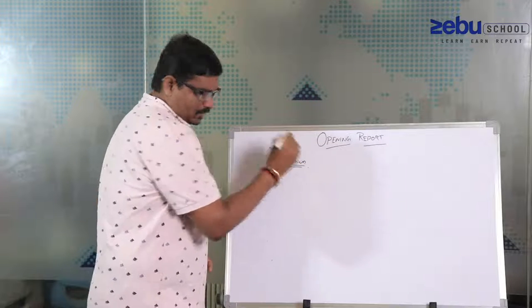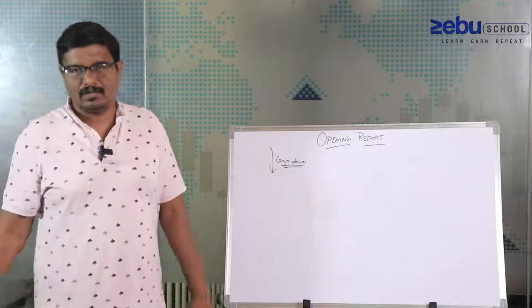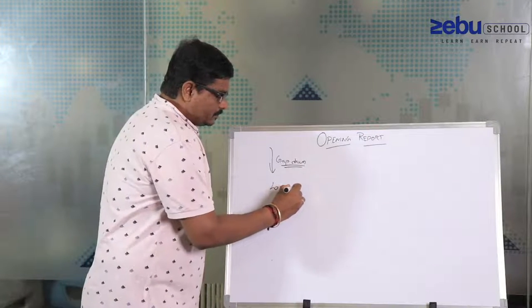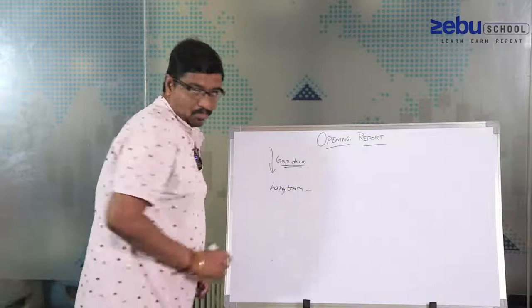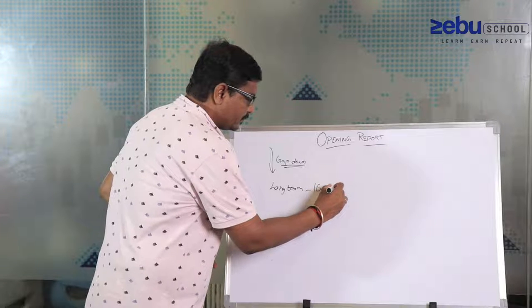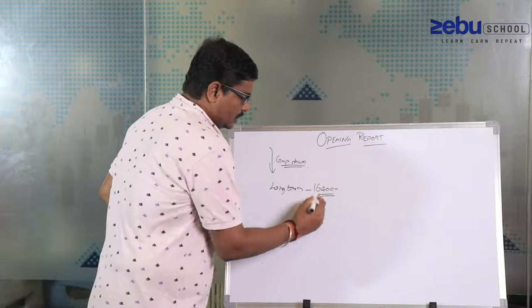So what we need to do is just book the shorts as planned. Long term there is a support like we discussed yesterday. Long term support is somewhere around 16,400 level.